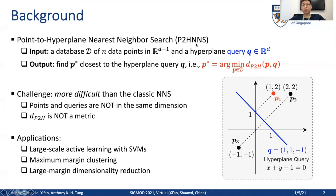This problem is more difficult than the classic Point to Point Nearest Search based on two aspects. First, the data points and the queries are not in the same dimension. Second, the Point to Hyperplane distance is not a metric, so traditional methods with the metric property may not be suitable for this problem.